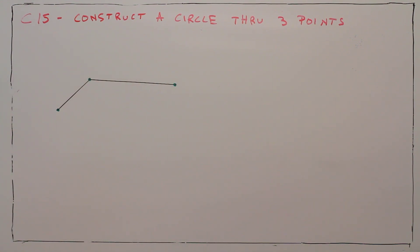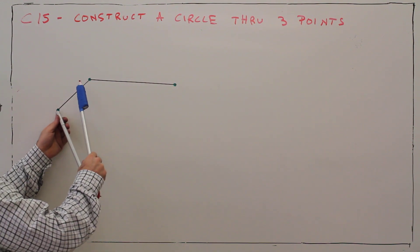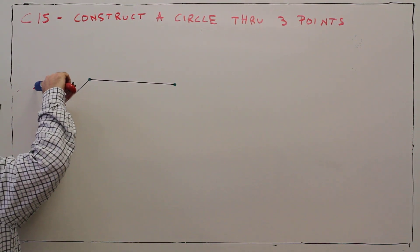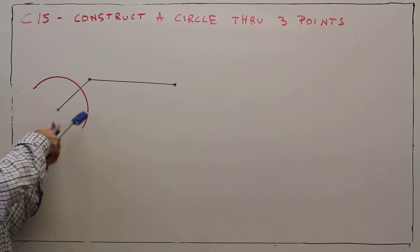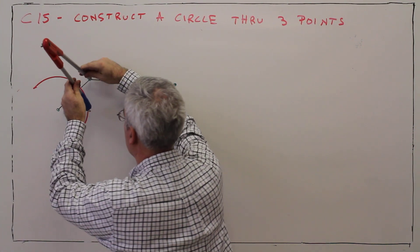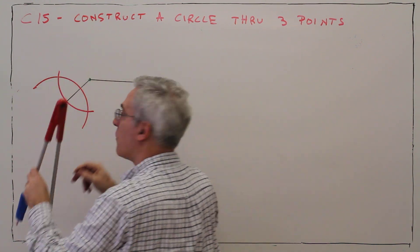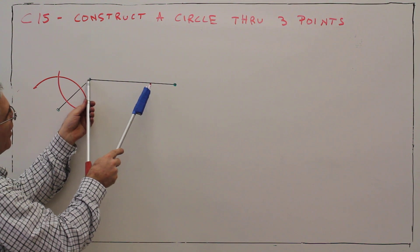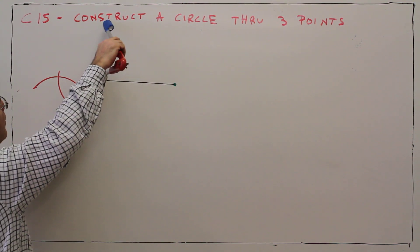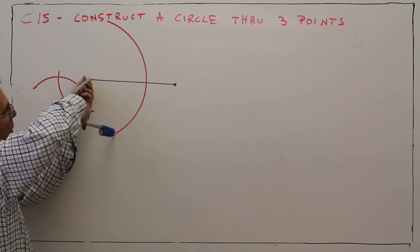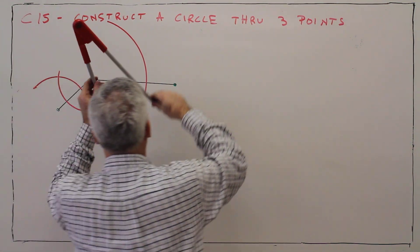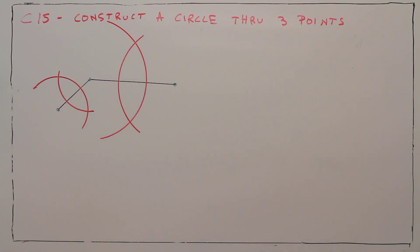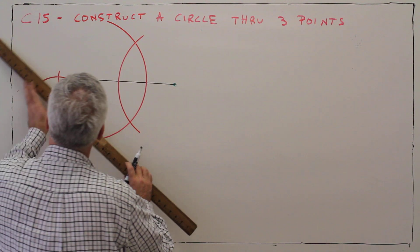Constructing the perpendicular bisector. Again, doing the fishy thing. More than halfway open. Again, I can do the arc like such, making the arcs. I've got my two points.